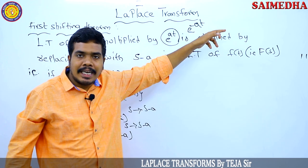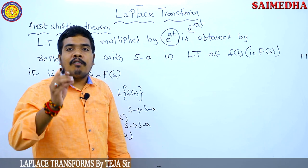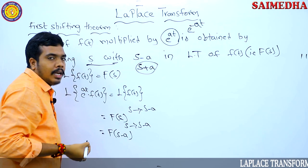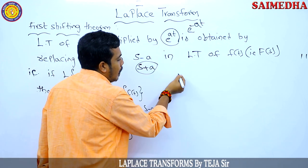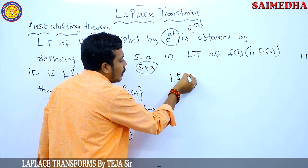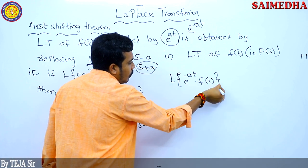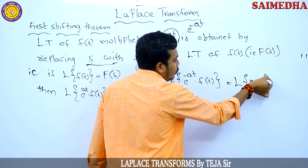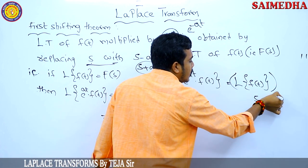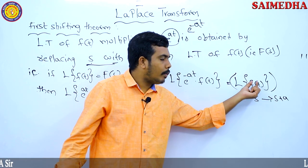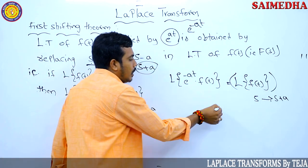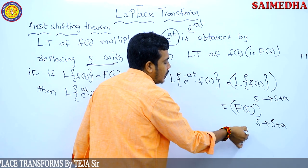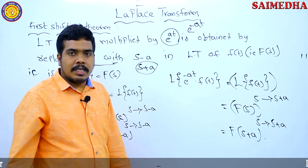For e^(-at) multiplied by f(t), the Laplace transform is obtained by replacing s with s plus a. The Laplace transform of e^(-at) into f(t) — by the first shifting theorem — is F(s) with s changed to s plus a, giving the final result F(s+a). This is the first shifting theorem condition.